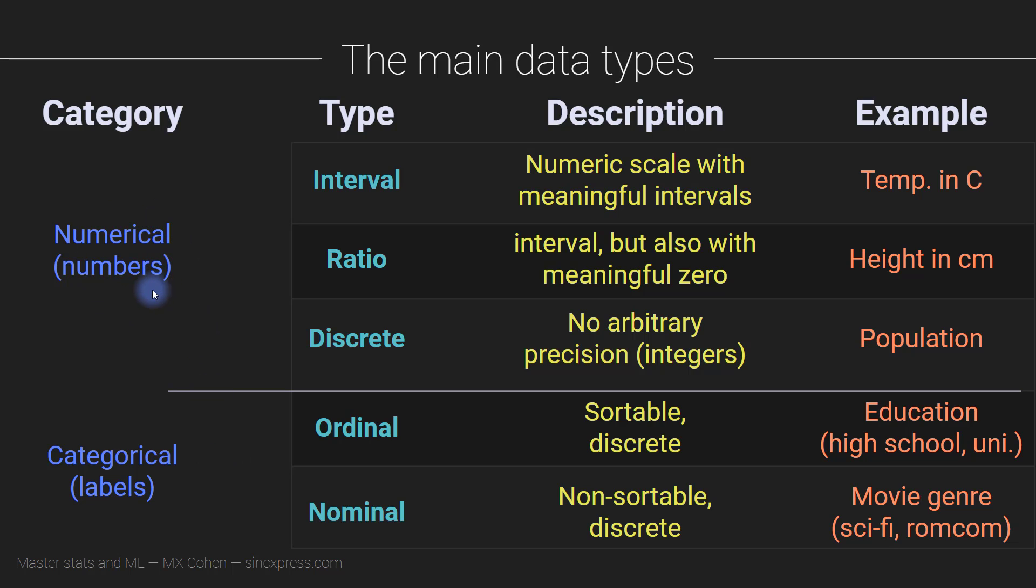So just a few quick examples to make sure it's clear. So some numerical types of data include temperature in Celsius, we attach numbers to these, your height in centimeters or inches, or Planck lengths, we attach numbers to these, the population, that could be the population of Sweden or the number of people living in your house. So these are all kinds of data that we attach specific numbers to, and those numbers are meaningful, they are intrinsic.